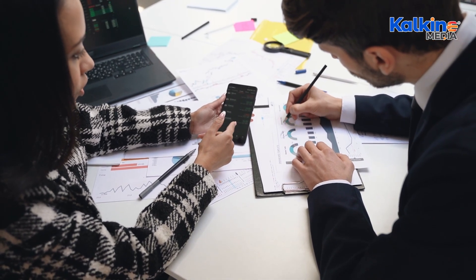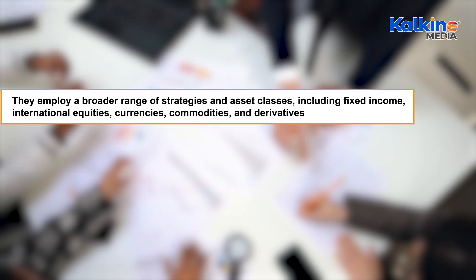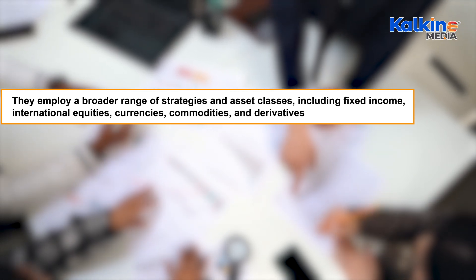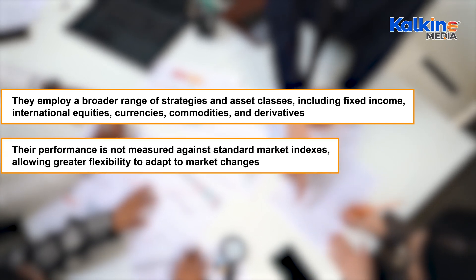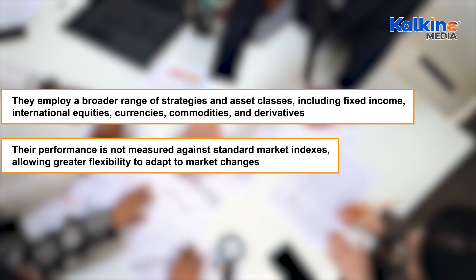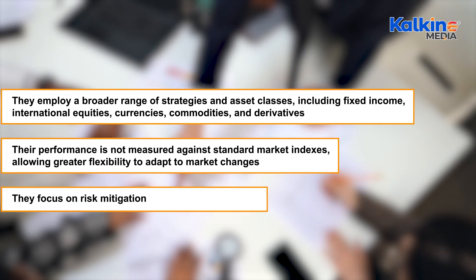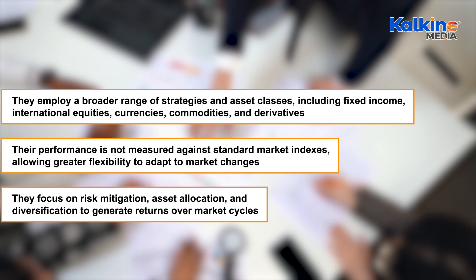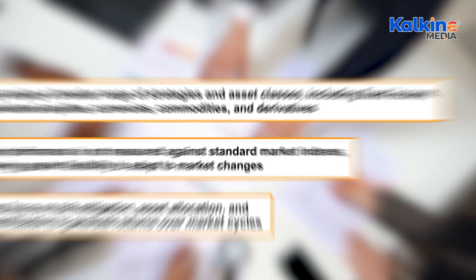Absolute return funds differ from traditional funds in several ways. They employ a broader range of strategies and asset classes, including fixed income, international equities, currencies, commodities, and derivatives. Their performance is not measured against standard market indexes, allowing greater flexibility to adapt to market changes, with a focus on risk mitigation, asset allocation, and diversification to generate returns over market cycles.